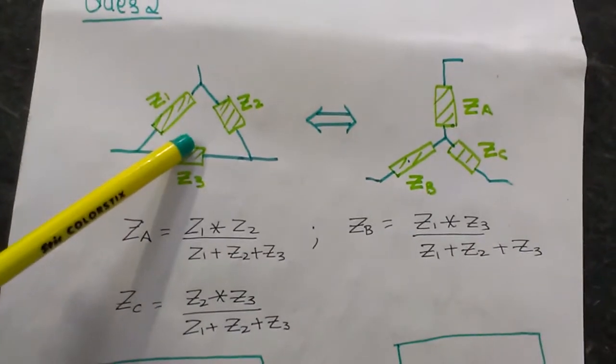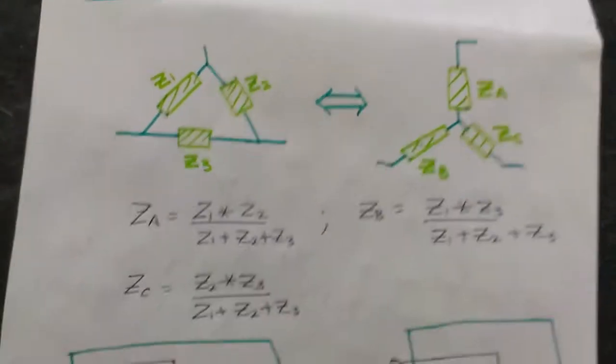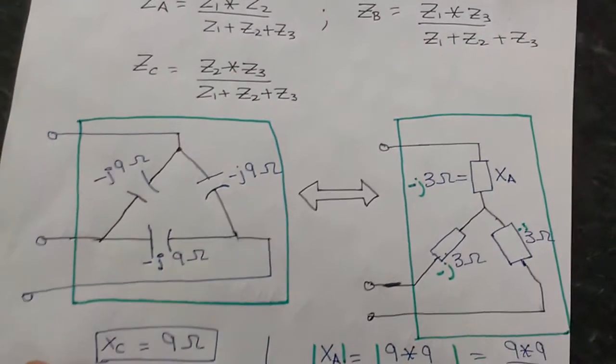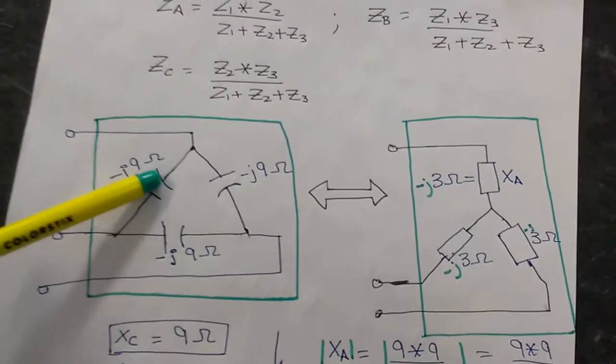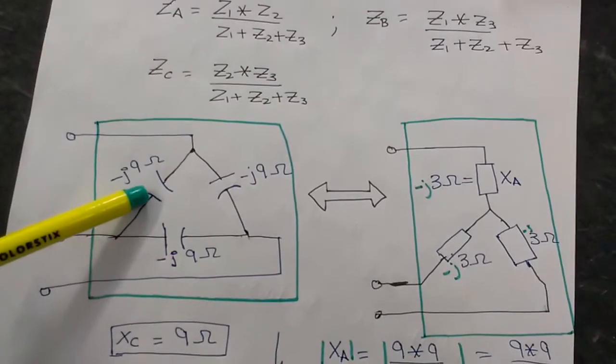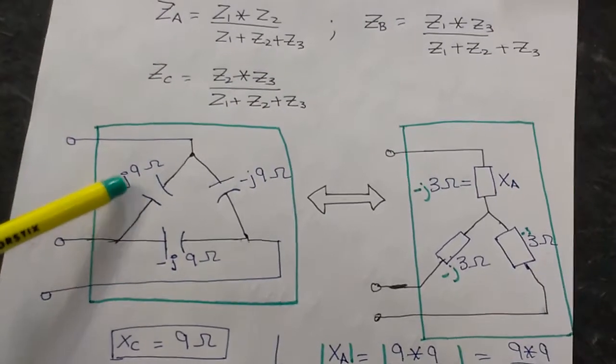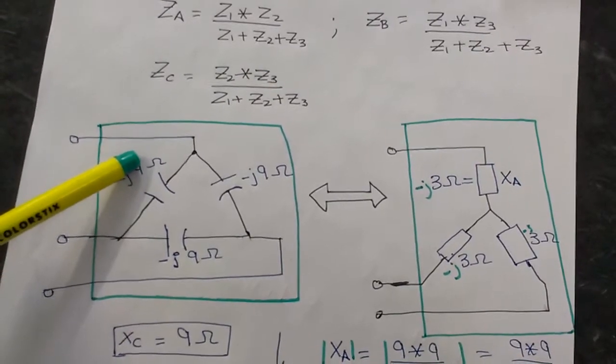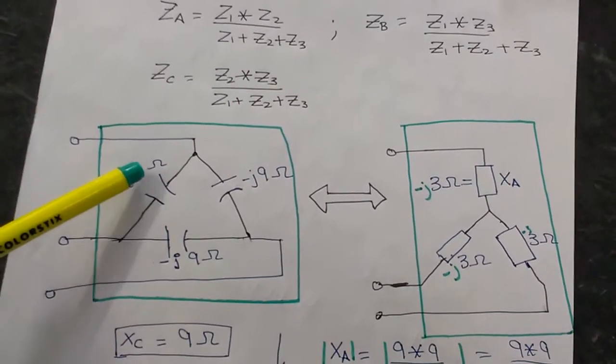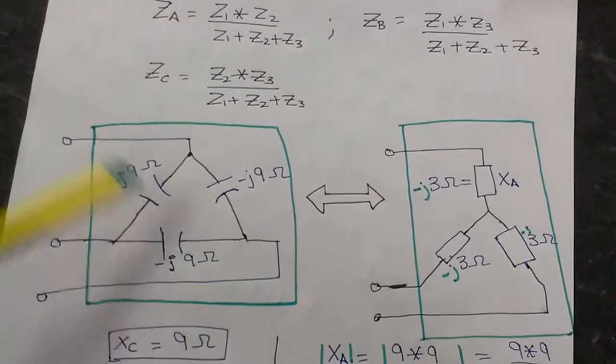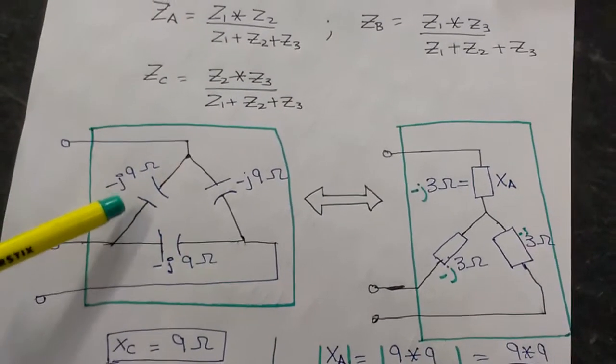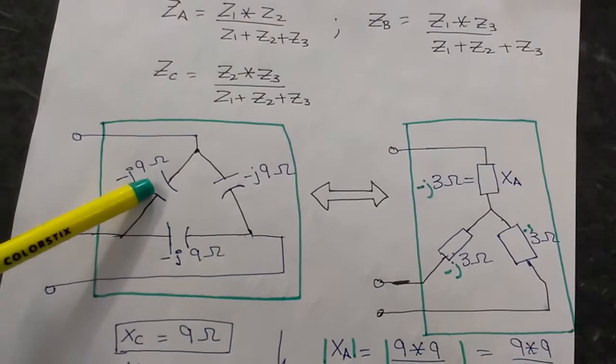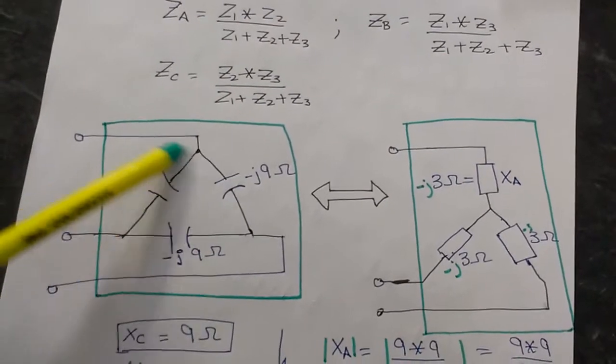Now let's take an example. In this case I am taking the reactance of the capacitor equal to minus j nine ohms. I've just selected this number nine so that it can be easily divided by three, just to make the maths easy. So there are three capacitors, now let's convert this Delta into a star configuration.